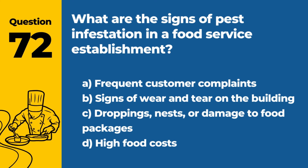Question 72. What are the signs of pest infestation in a food service establishment? a. Frequent customer complaints. b. Signs of wear and tear on the building. c. Droppings, nests, or damage to food packages. d. High food costs. Answer c. Droppings, nests, or damage to food packages. Signs of pest infestation include evidence such as droppings, nests, or visible damage to food packages and structures.